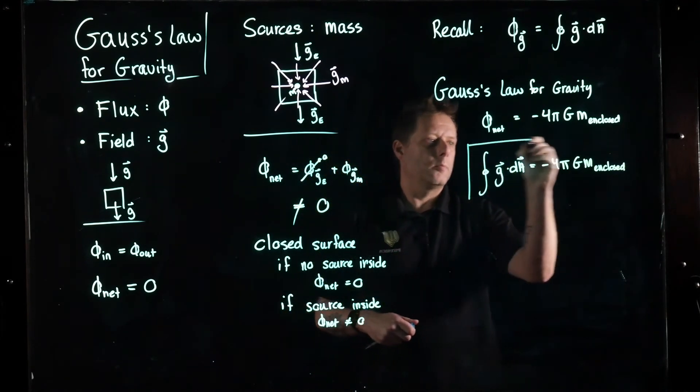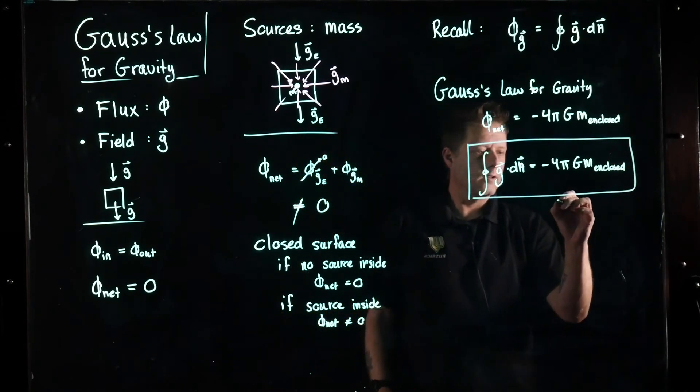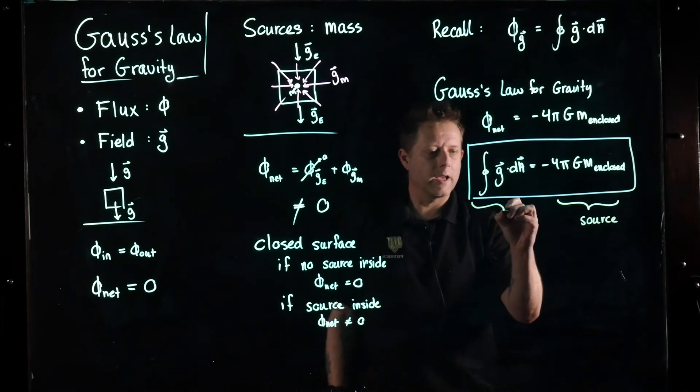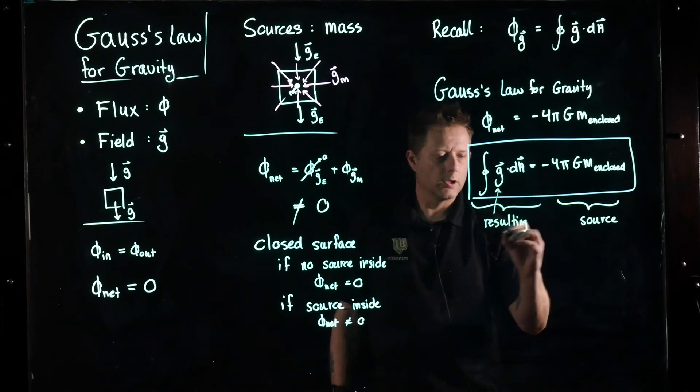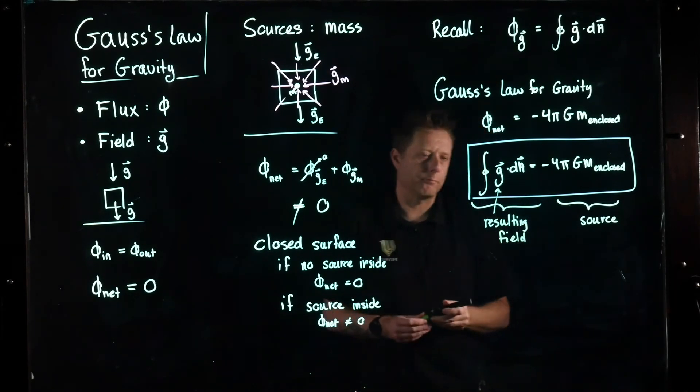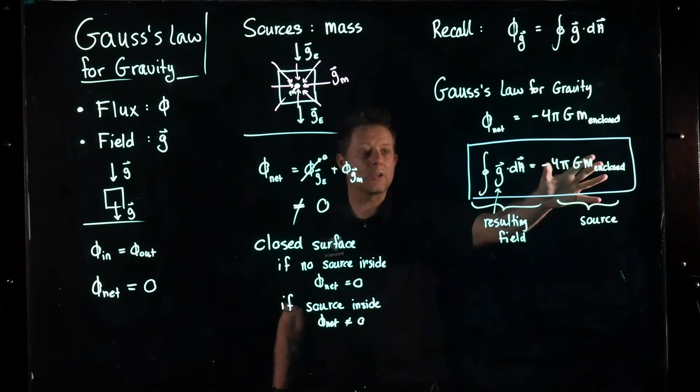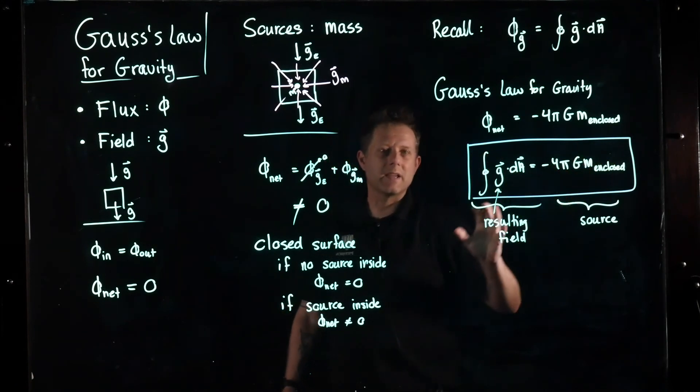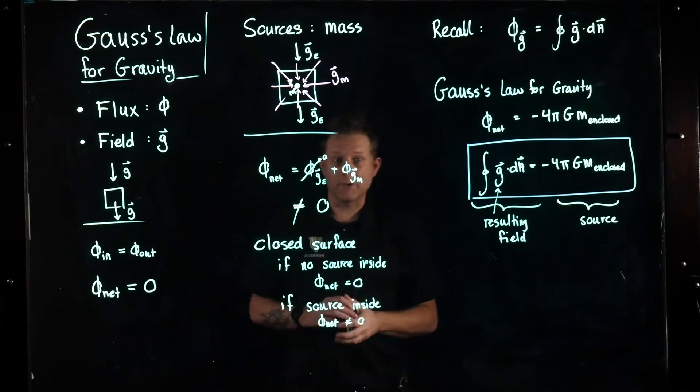What this tells us is that here we have the source, and here we have the resulting field. So if we know something about the mass, and not only that, but maybe some sort of distribution, that's actually what we're going to see later on. But if we have a mass and how the mass is distributed, we can calculate the field. And that is really cool.